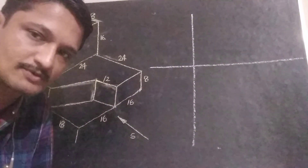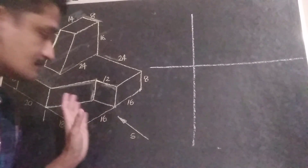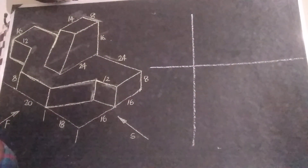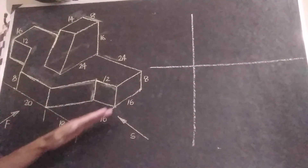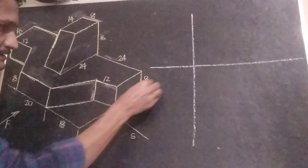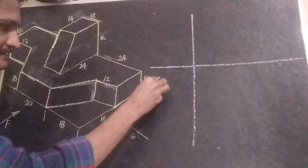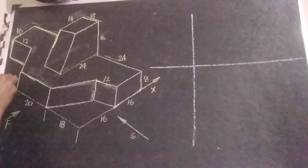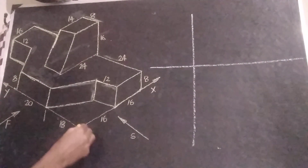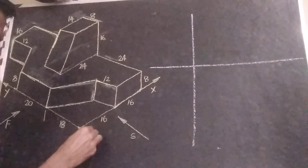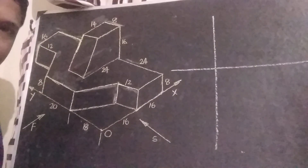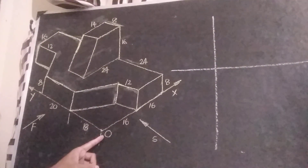An isometric figure is already given. This line has the isometric x-axis, this line has the isometric y-axis, and this point is the origin. This particular point is the origin.